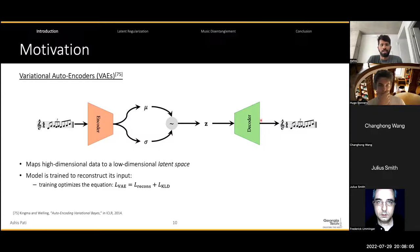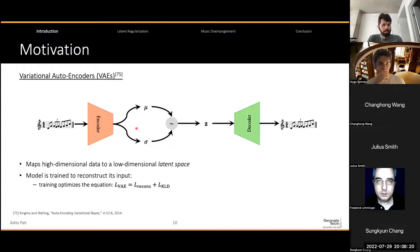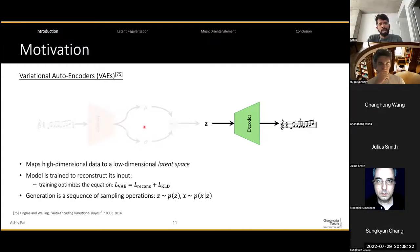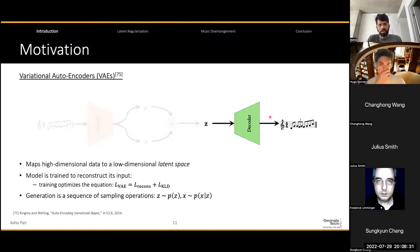There is also a decoder, which is another neural network that tries to reconstruct the measure of music back. The model is trained to reconstruct its input using a reconstruction loss and a KL divergence, which forces the distribution of this latent space to be mostly Gaussian-like. During generation, we can just sample a latent vector and then pass it through the decoder in order to create new musical measures.